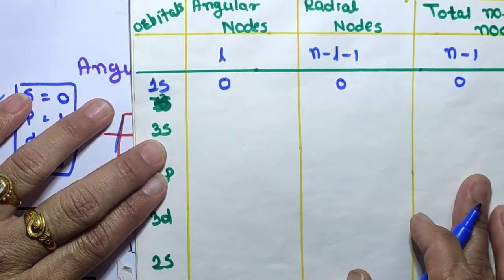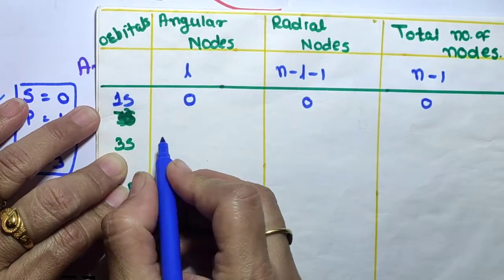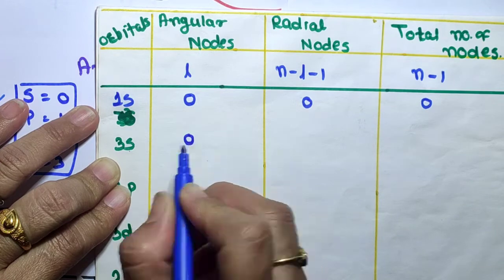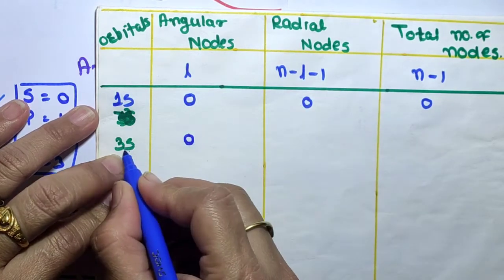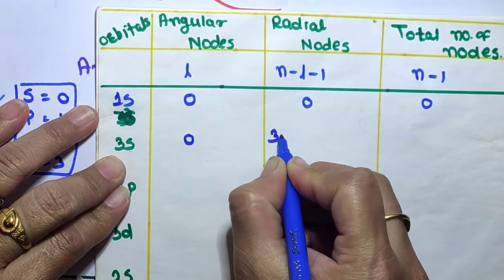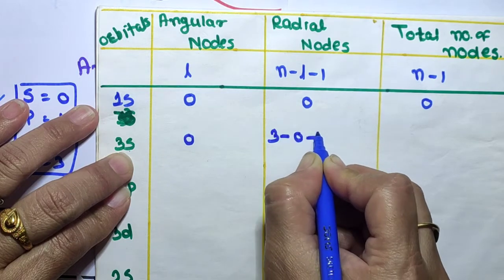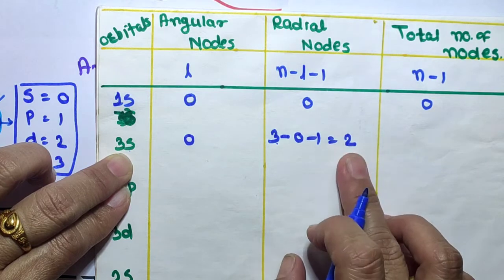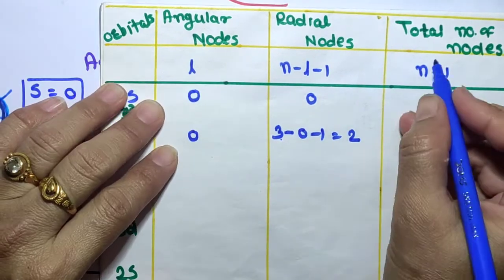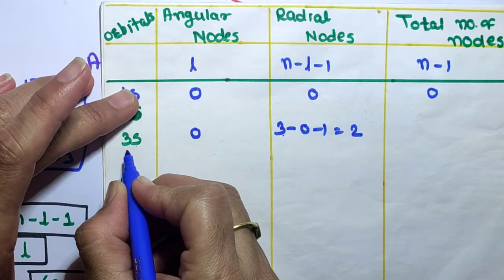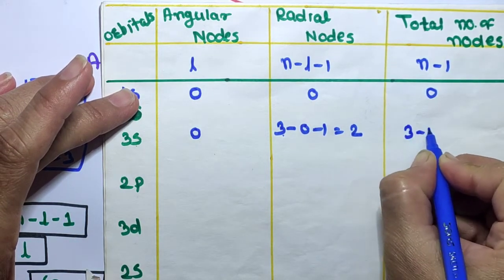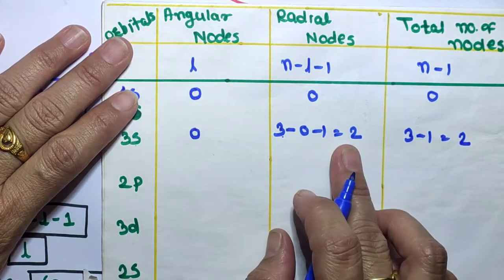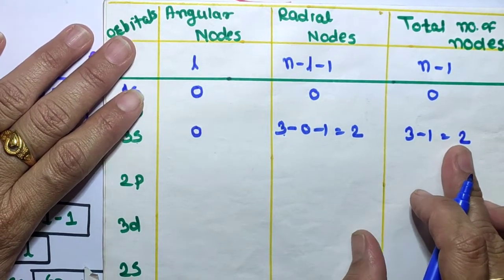Next, the 3s orbital. For s orbitals, L = 0, so angular nodes = 0. Radial nodes = n − L − 1 = 3 − 0 − 1 = 2. So the 3s orbital contains 2 radial nodes. Total number of nodes = n − 1 = 3 − 1 = 2.